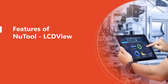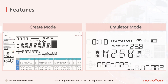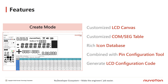Let's take a look at the features of LCDView. LCDView has create mode and emulator mode, which are for editing projects and emulating results respectively. Users must finish all the settings of LCD and Comsec table under create mode. In create mode, users can adjust customized settings easily, such as LCD panel size and the amount of Comsec table. Meanwhile, LCDView has a rich icon database which supports users in adding their icons in easy steps.